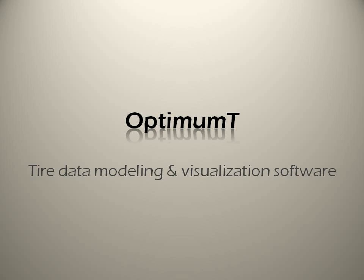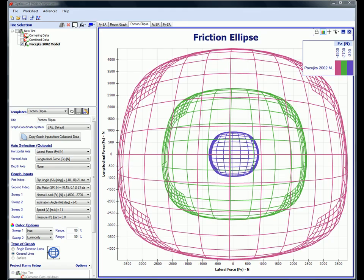Optimum T is a tire data visualization and modeling software from Optimum G, a vehicle dynamics consulting firm. The software program Optimum T is broken up into two main parts: visualization and model fitting.